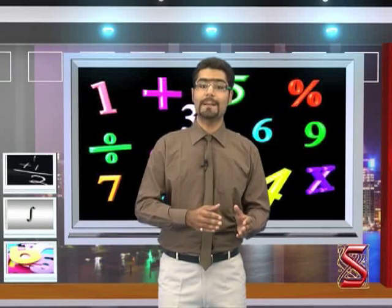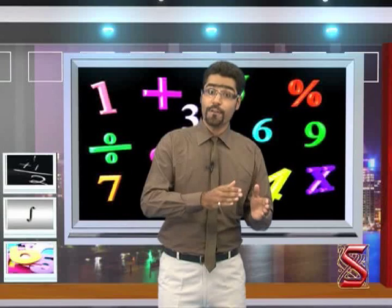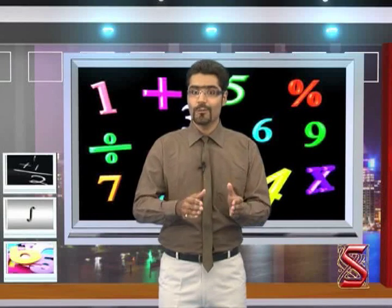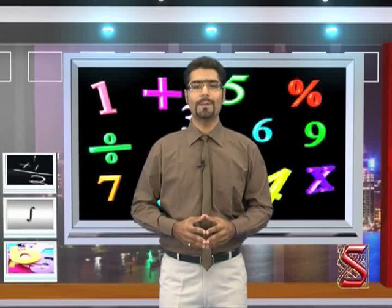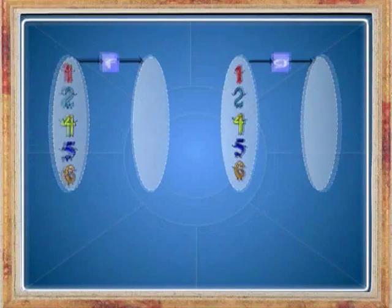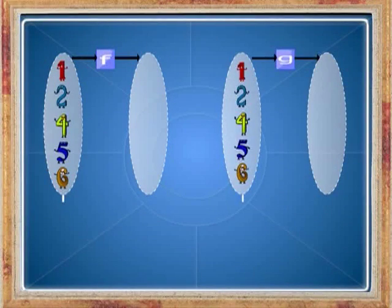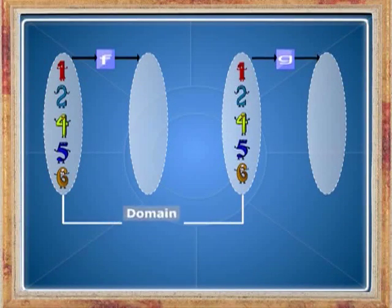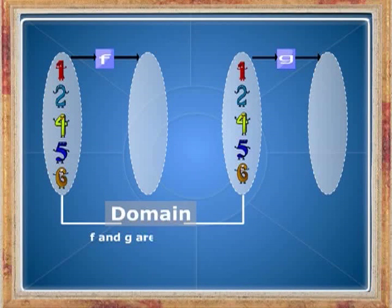You can see that f and g are not the same expression on the same domain D, but f of x is equal to g of x for all x belonging to the domain. The images of all elements of the domain in both functions are the same. So f and g are known as equal functions.